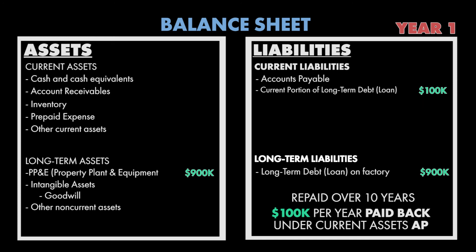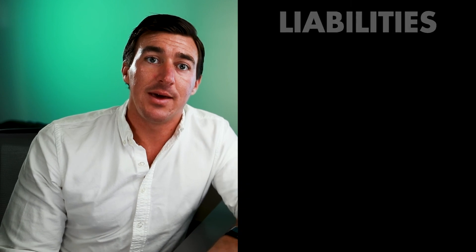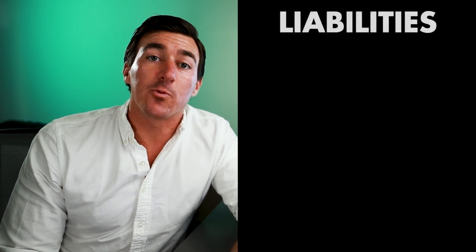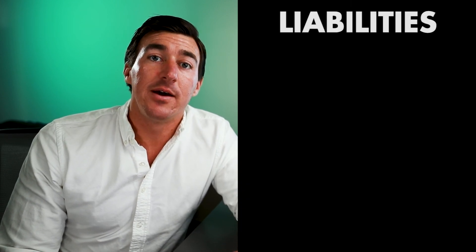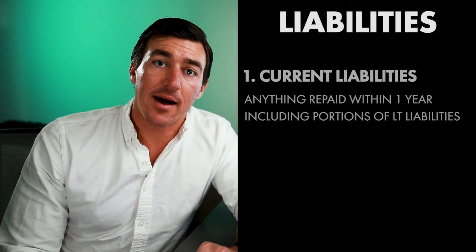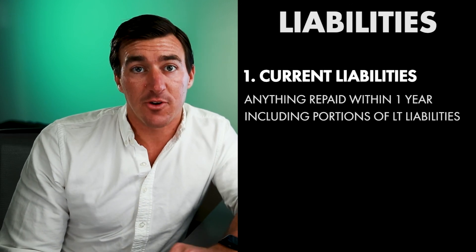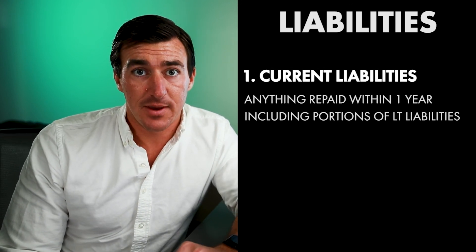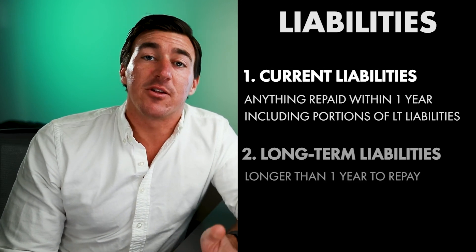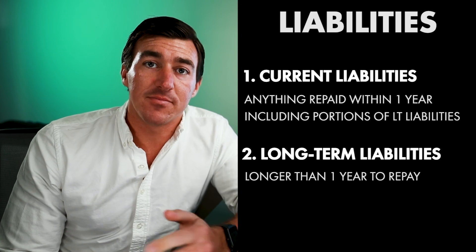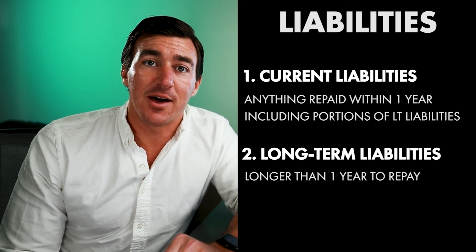Let's recap. The same rule that applies to assets applies to liabilities when it comes to current versus long-term. Anything that's going to be repaid within one year is a current liability, even if it's a portion of a long-term liability. Anything that's going to be longer than one year to pay off is a long-term liability.